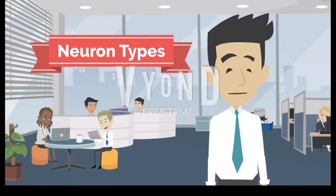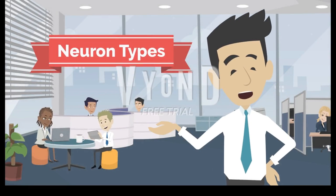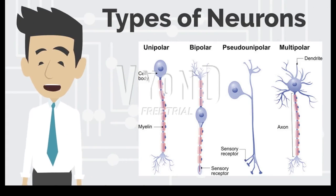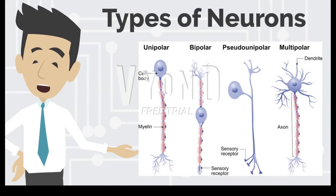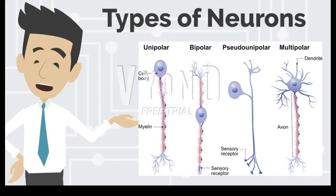Today we will be breaking down the different types of neurons and their different functions throughout the body. As demonstrated in the figure here on screen, there are four main types of neurons: unipolar, bipolar, pseudo-unipolar, and multipolar neurons. These neurons all have a generally similar structure, but the locations of the cell body are different.